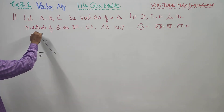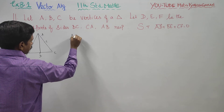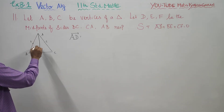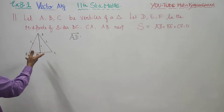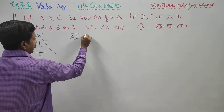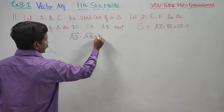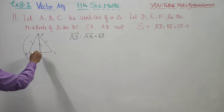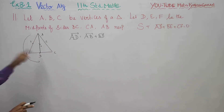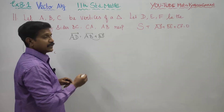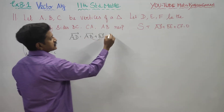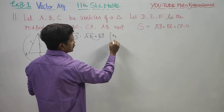We need to show that AD + BE + CF = 0. First, I will find my AD vector. AD vector equals AB plus BD, by the Triangle Law of Addition.